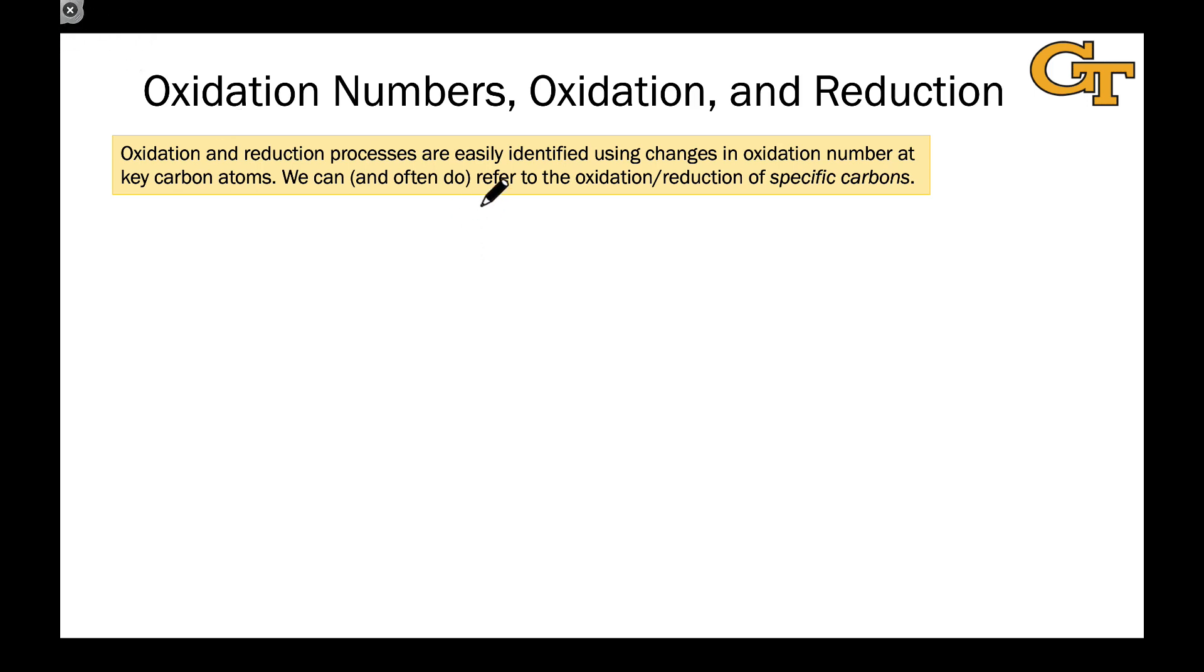The beauty of the oxidation number formalism and assigning oxidation numbers is that we can easily identify oxidation and reduction at particular atoms. We'll often look at specific carbons, especially, by applying the oxidation number formalism to those atoms in the reactants and products of a reaction. We'll do this often in looking at biochemical reactions and metabolic pathways to understand where oxidation and reduction have occurred within a biochemical chain or series of reactions.